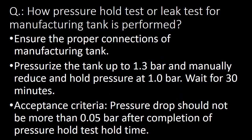Next frequently asked question: how is the pressure hold test or leak test of a manufacturing tank performed? The procedure is: ensure proper connections of the manufacturing tank, pressurize the tank up to 1.3 bar, manually reduce and hold the pressure at 1.0 bar, and wait for 30 minutes. The acceptance criteria is that the pressure drop should not be more than 0.05 bar after completion of the hold time.